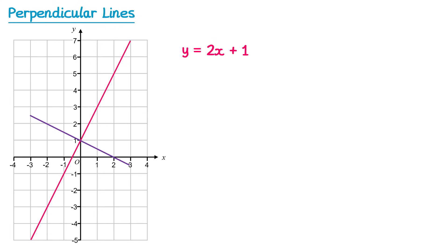How could we work out the gradient and the equation of the purple line? The first thing to notice is that the red line has a positive gradient, and the purple line must have a negative gradient since it slopes in the other direction. So we know for sure the gradient is going to be negative. We also know they both have the same y-intercept since they cross the y-axis at plus 1. So most people's first instinct is that the equation might be y equals negative 2x plus 1 — unfortunately this isn't correct.